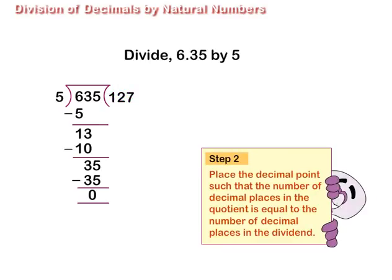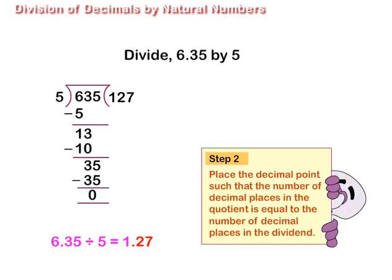Step 2. Place the decimal point such that the number of decimal places in the quotient is equal to the number of decimal places in the dividend. Since the dividend 6.35 has 2 decimal places, place the decimal in the quotient 127 after two places from the right.